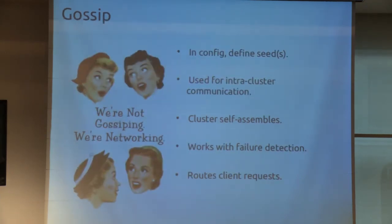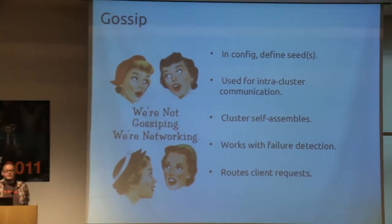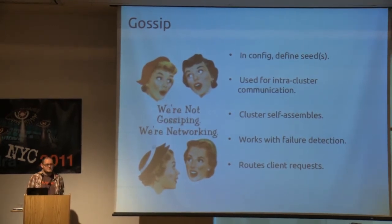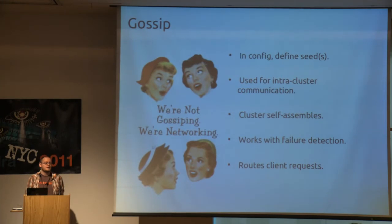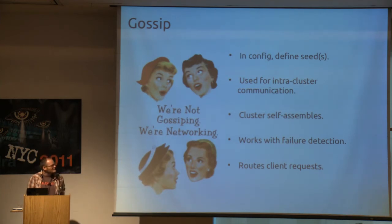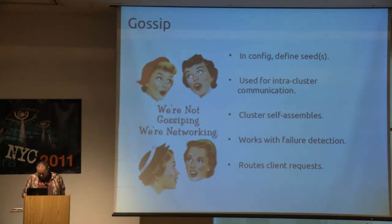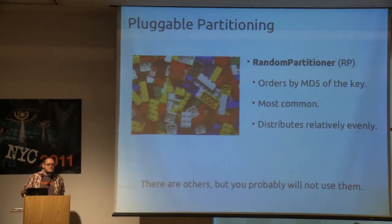How does Cassandra work without a name node? It uses a gossip protocol which routes requests, checks on the status of other nodes, and deals with failure via an accrual failure detector. The first thing you generally need to do is set your seed, and after that the cluster is sort of self-assembled.